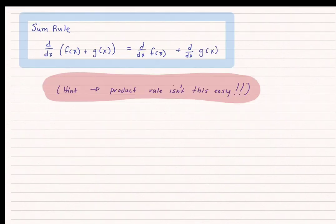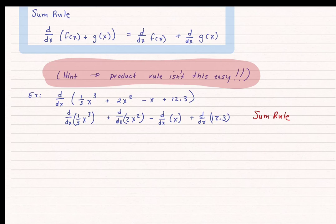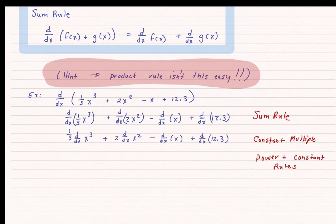The next rule is the sum rule — the derivative with respect to x of f(x) plus g(x) is simply equal to the derivatives of the separate functions added together. I want to warn you: do not assume this works with products — that is, with multiplication or division. But for addition and subtraction, it is very straightforward. The derivative with respect to x of the full expression equals the derivative of each individual term by the sum rule. Then I apply the constant multiple rule to pull constants out, and finally use the power and constant rules to get the final answer.